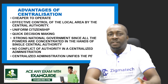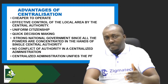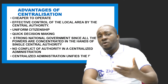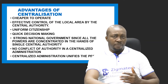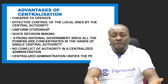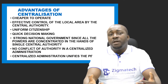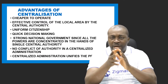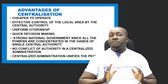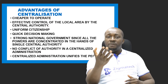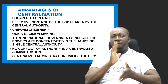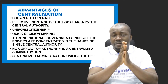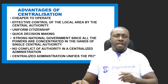Also, there is a strong national government since all powers are concentrated in a single central authority. A government that enjoys centralized power is usually very strong because it commands a lot of power and serves as the source of authority for the state. There is also no conflict of authority in a centralized administration, and centralized administration unifies the people, bringing them together.